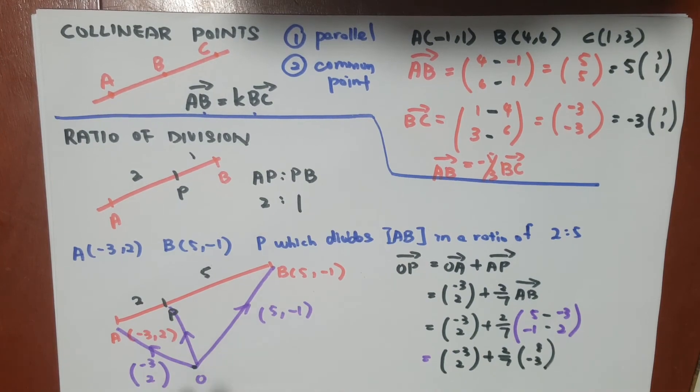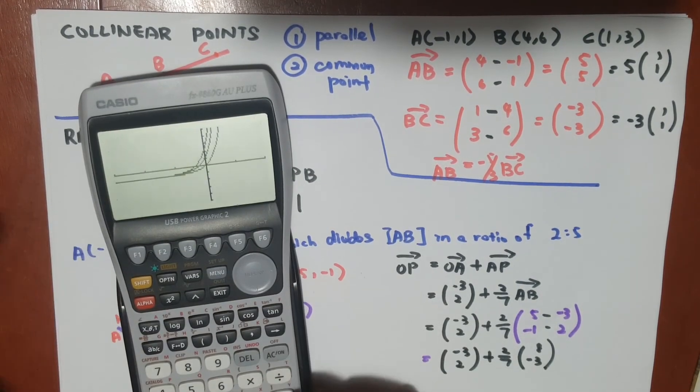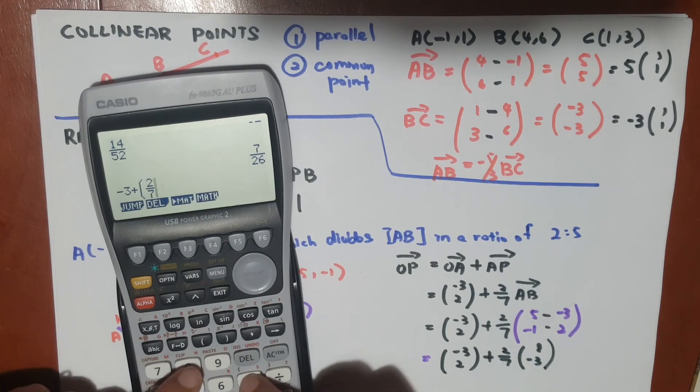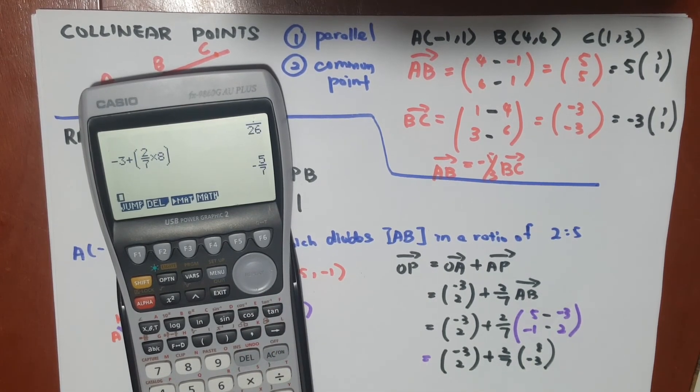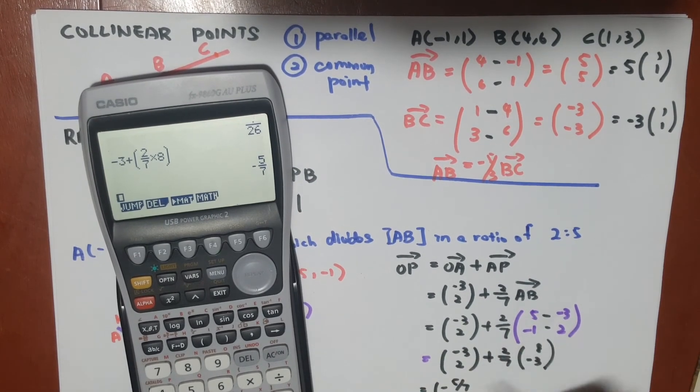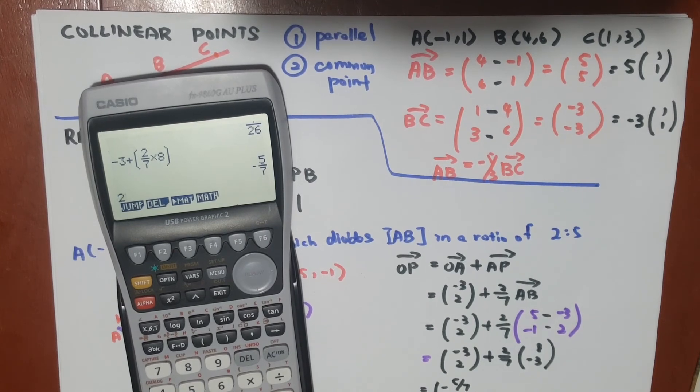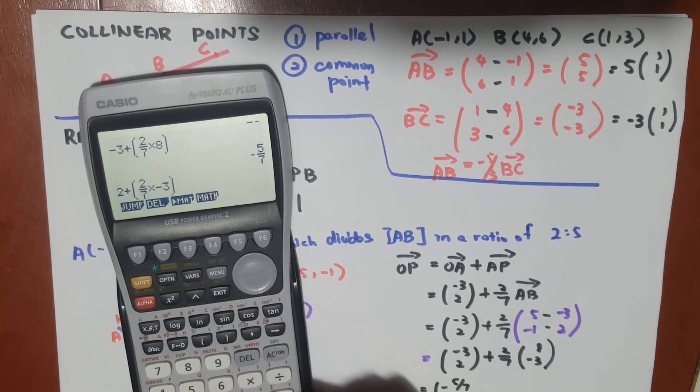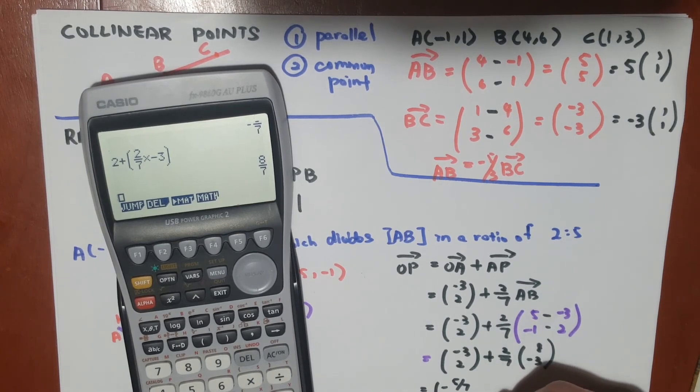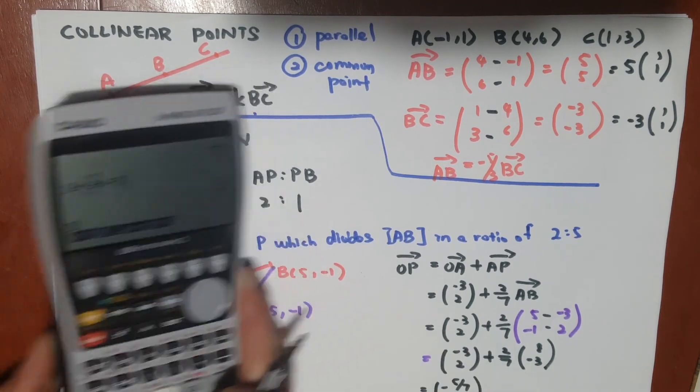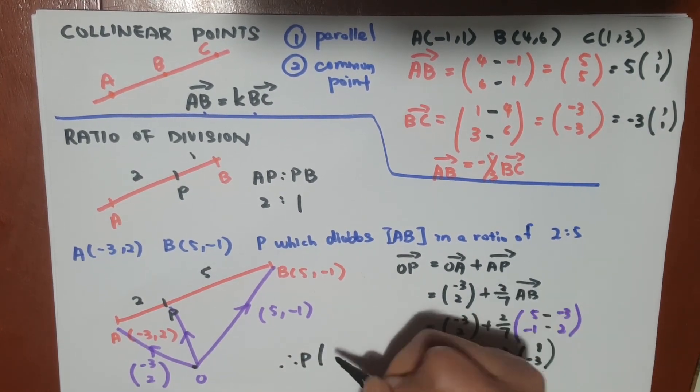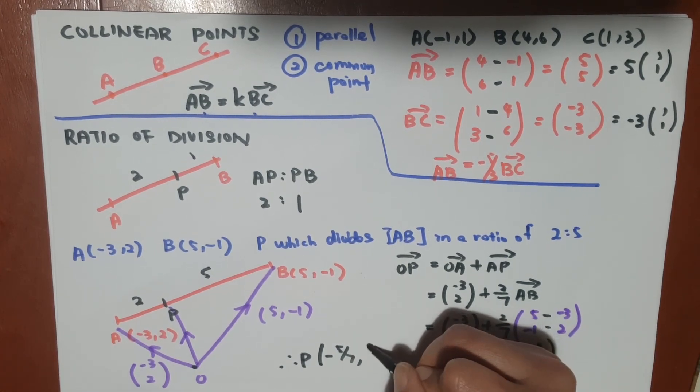By getting this, we find that the top part will be -3 plus 2/7 times 8, which is -5/7. And the bottom part will be 2 plus 2/7 times -3, which would be 8/7. So this will be the coordinate of P. Therefore, the coordinate of P will be (-5/7, 8/7).